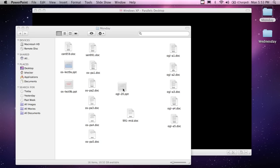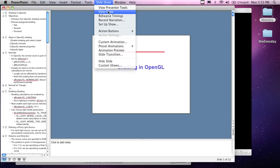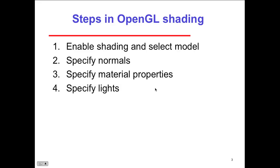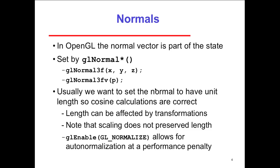Lecture number 20 covers shading applied to OpenGL: OpenGL shading functions, polygonal shading, and the primary focus is flat, smooth, and Gouraud shading. Steps in OpenGL shading: enable shading and select a model, specify the normals, specify the material properties, then specify the lights — because if we're putting shade in there we have to have light.